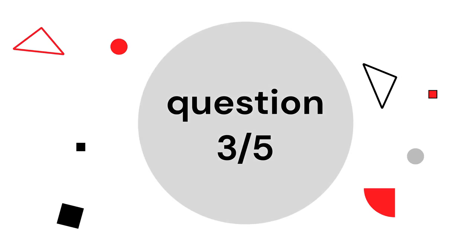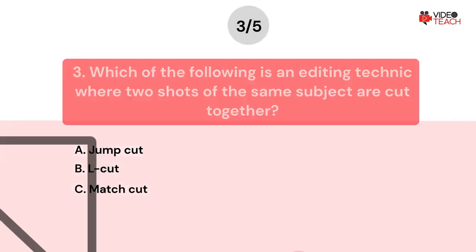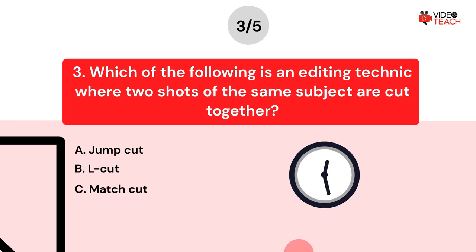Question number three. Which of the following is an editing technique where two shots of the same subject are cut together? Option A: Jump cut. Option B: L cut. Option C: Match cut. Now you have about 15 seconds to think about your answer.